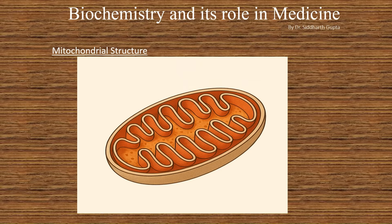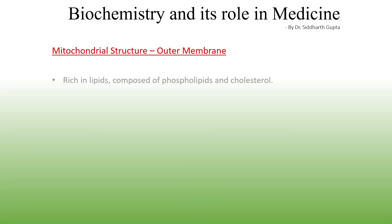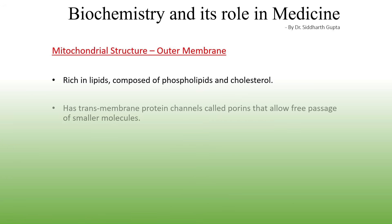Here is an enlarged view of the mitochondrion to help visualize its structure in detail. We can see the outer membrane, the inner membrane, the intermembrane space lying between the two membranes, the cristae — which are invaginations of the inner membrane — and the mitochondrial matrix. The outer membrane is rich in lipids, composed of phospholipids and cholesterol. It has transmembrane protein channels called porins, which allow relatively free passage of smaller molecules, making it highly permeable to smaller molecules.